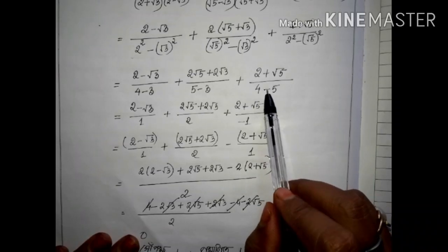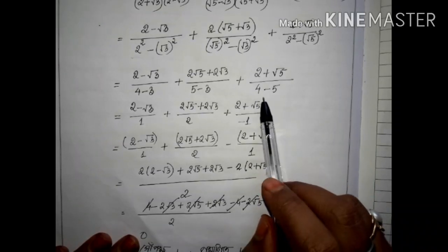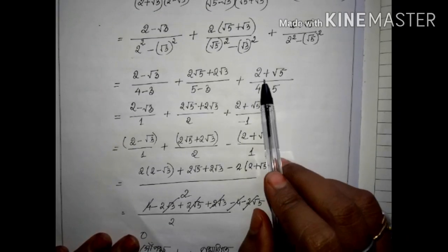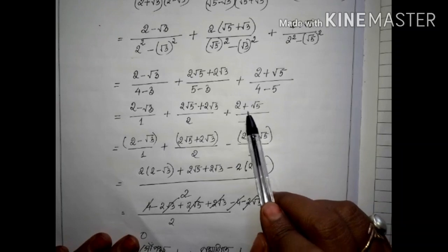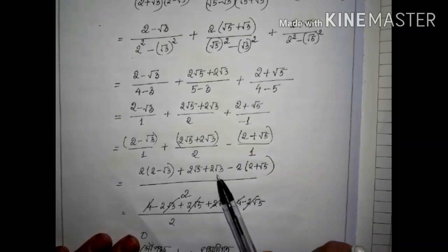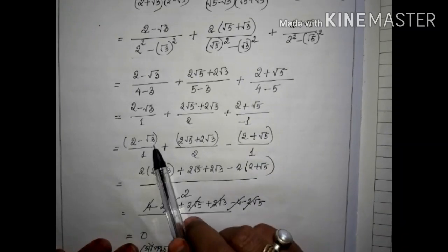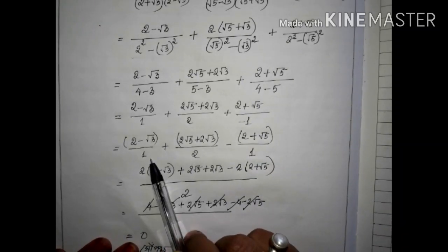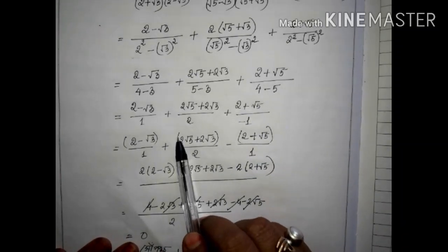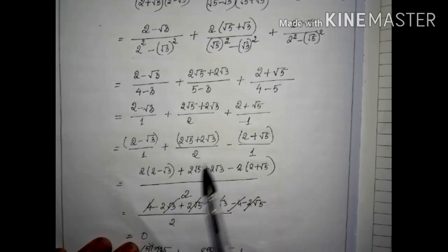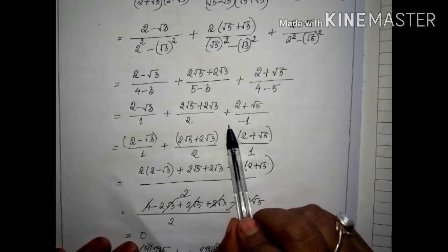Replaced by 2 minus 5. We will also have 2 minus 3 by 1.